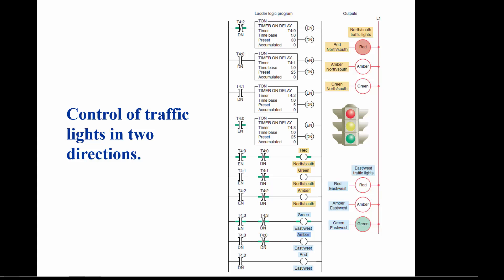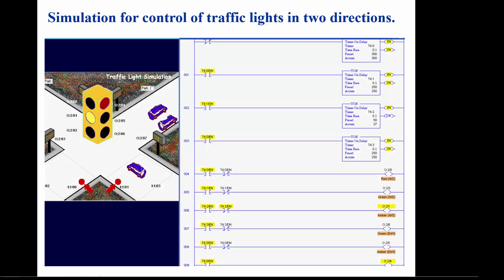The east-west amber is on when T4:3/DN is a 1 and T4:0/DN is a 0. This would be the time between T4:3 finishing and T4:0 finishing, or 5 seconds. The east-west red is turned on when T4:0 is a 1, which is basically when the north-south green light is on. The program will cycle continuously but we will pause the simulation to make it easier for you to examine the status of the timers and lights.